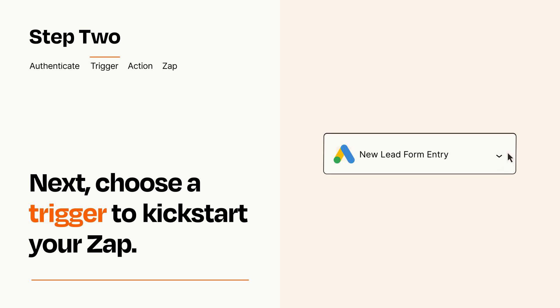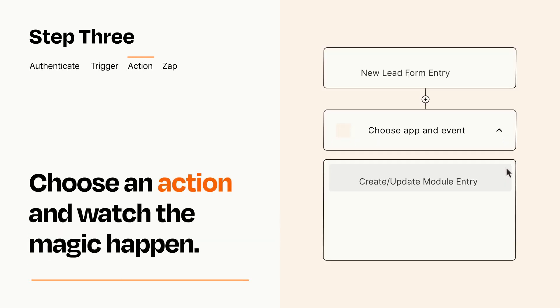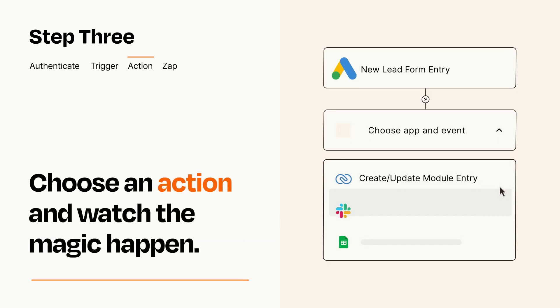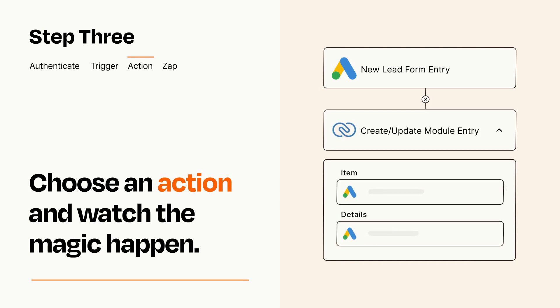This last part is where the magic happens. Choose the action you want to happen in your target app. You'll see a bunch of fields where you can specify the details of your Zap. You can type free form text or pull data in from your trigger step as needed.